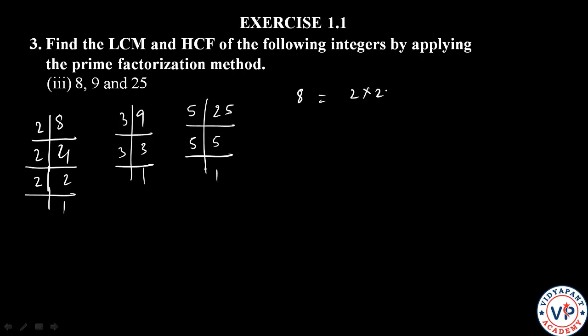So 8 is 2 into 2 into 2, which is equal to 2 cube. And here, 9 is 3 into 3, which is equal to 3 square. And 25 is 5 into 5, which is equal to 5 square.